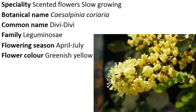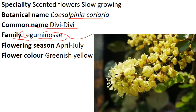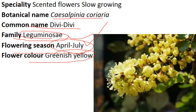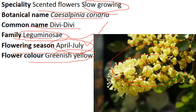Next one: Caesalpinia couraria. Common name is Dwarf. Family is Leguminosae, the Pea family. Flowering season is April to July, in the summer season. Flower color is greenish yellow — you can see the greenish yellow color here. This is a scented flower and it is slow growing in nature. Scented flower means it has a very good fragrance.